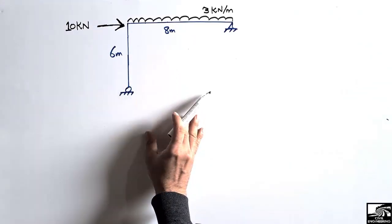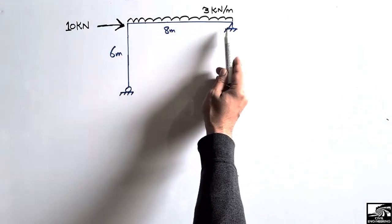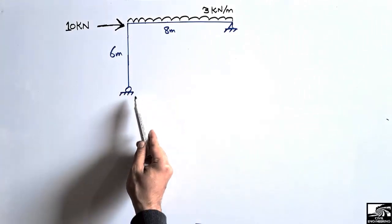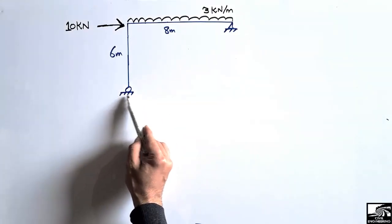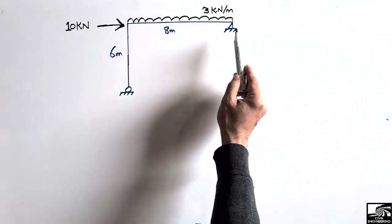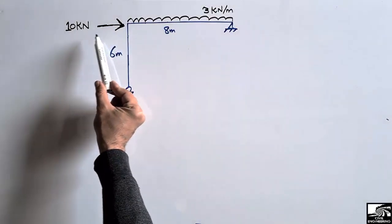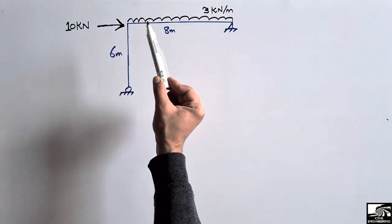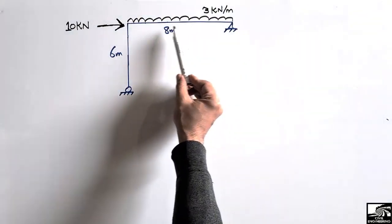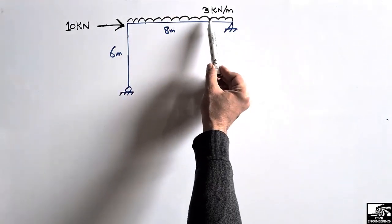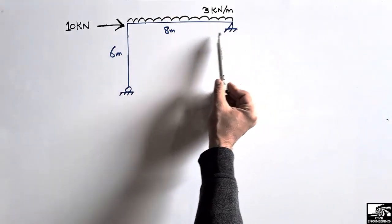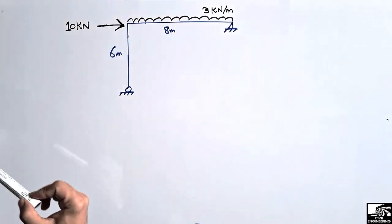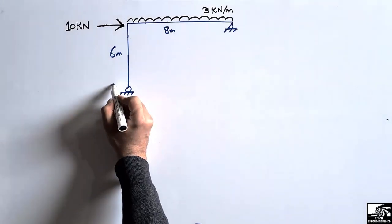We have to analyze this frame. This frame consists of one beam and one vertical member known as the column. Here we can see a roller support, and here we can see a hinge support. A horizontal load of 10 kN is acting at the joint of beam and column, and this beam is loaded with a uniformly distributed load of 3 kN per meter. The beam length is 8 meters while the column length is 6 meters.